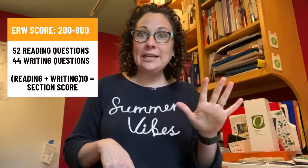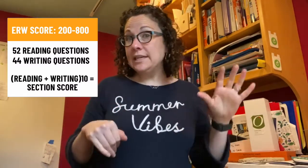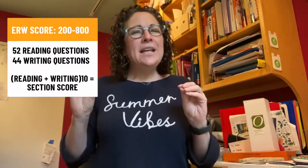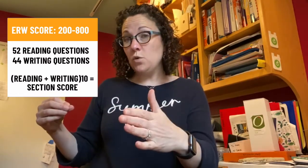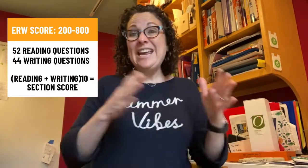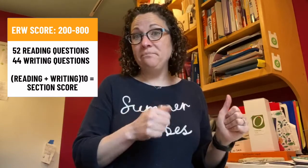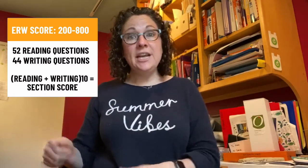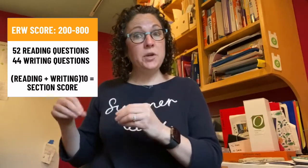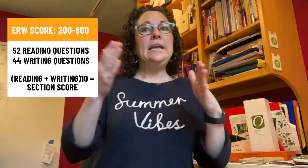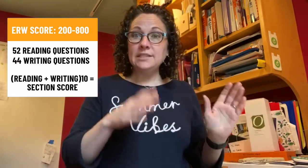The evidence-based reading and writing section — the official name for the reading and writing/language section — is also scored between 200 and 800. The SAT uses two different conversion charts: for the reading section, your raw score out of 52 questions converts to a number between 10 and 40, and for the writing and language section, your raw score out of 44 questions also converts to a number between 10 and 40.